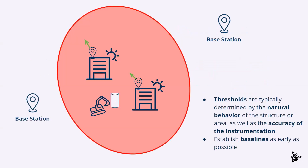Visually, what that looks like — we have a setup here, an example of construction in an urban environment. We have our region of influence, which is the area that the construction is in that we expect to be able to influence some sort of movement. In this example, we have two buildings that we're monitoring. The construction is nearby, and so we have our GNSS system set up on the buildings to measure that offset or any potential change in location due to that construction.